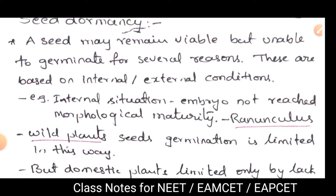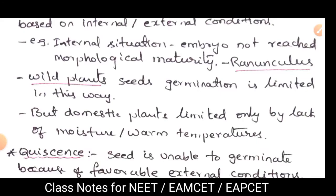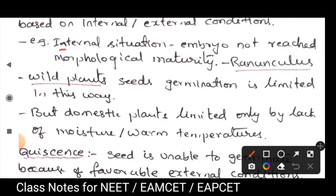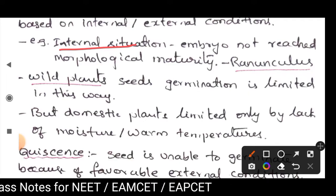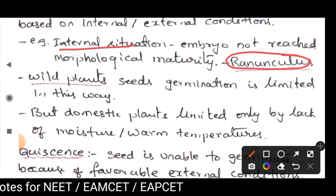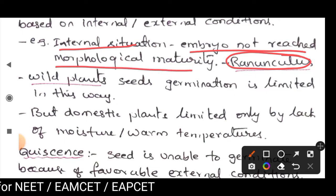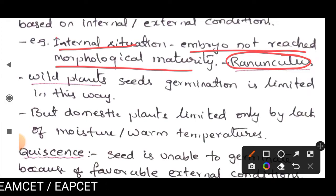In seed dormancy, we will discuss some examples. For internal situations, take Ranunculus: the Ranunculus embryo has not reached morphological maturity. A morphologically immature embryo will not germinate, so the seed does not germinate. That is an internal situation.